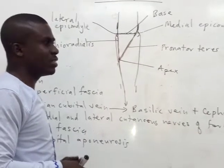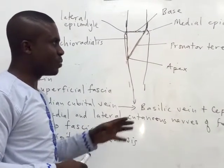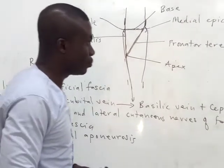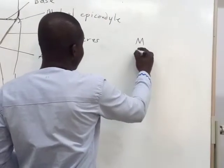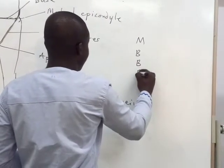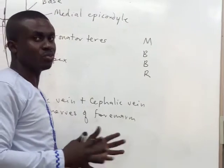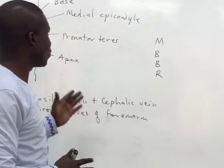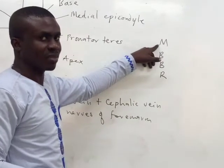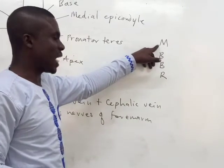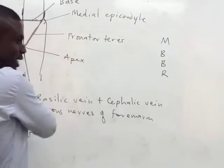Having seen this, what are the contents of this cubital fossa? There are very important contents that we have to know. Simply, by this mnemonic MVBR — just by remembering MVBR — you should be able to tell the contents of the cubital fossa. Remember, it starts with M for medial, so these structures are listed from medial to lateral.